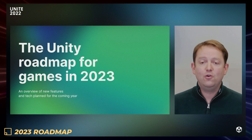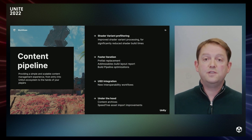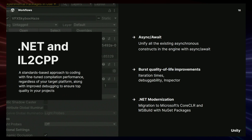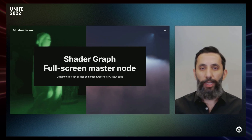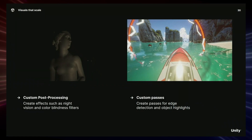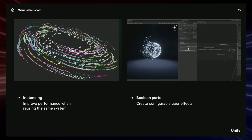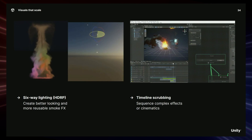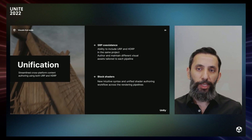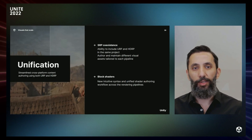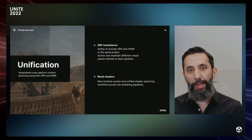And finally, here are some quick highlights from Unity's 2023 roadmap: shader variant pre-filtering, prefab replacement, unifying asynchronous constructs as async and await, memory profiler, material variants, shader graphs, fullscreen master node for custom post-processing, custom passes, custom render textures, local volumetric fog, and more. VFX graph instancing, boolean ports, six-way lighting, and timeline scrubbing. Adaptive probe volumes, enhanced visual quality, and additional GI improvements. SRP coexistence, as previously mentioned, and block shaders that bring a new intuitive syntax and unified shader offering workflow across rendering pipelines.